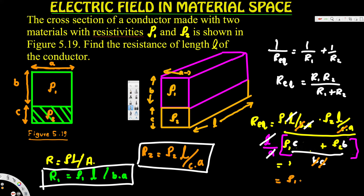Finally, we end up with R_eq equals rho1 times rho2 times l divided by (rho1 * c + rho2 * b) times a. That is our final answer for the resistance along the length l. I hope this helps, thanks for watching.